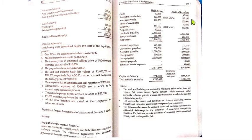For notes receivable, there is no additional information changing its value, so 100,000 is forwarded as the realizable value. Item B states that 10,000 interest is receivable on the note — the note has earned interest — so this is an addition to realizable value. Interest receivable of 10,000 is indicated alongside notes receivable since it is related to that asset.